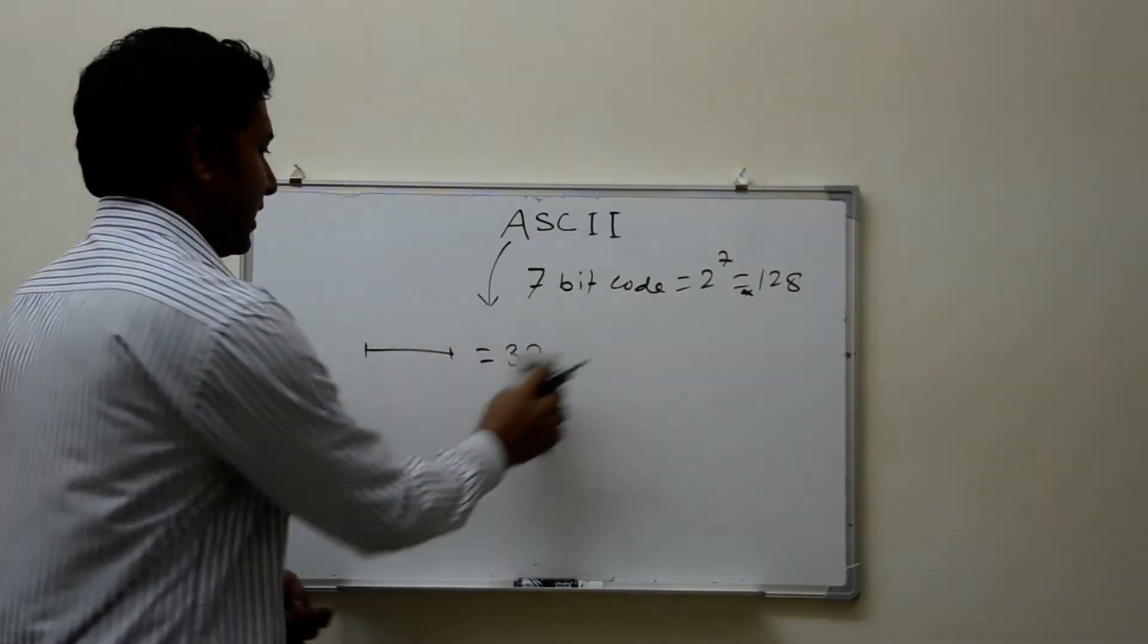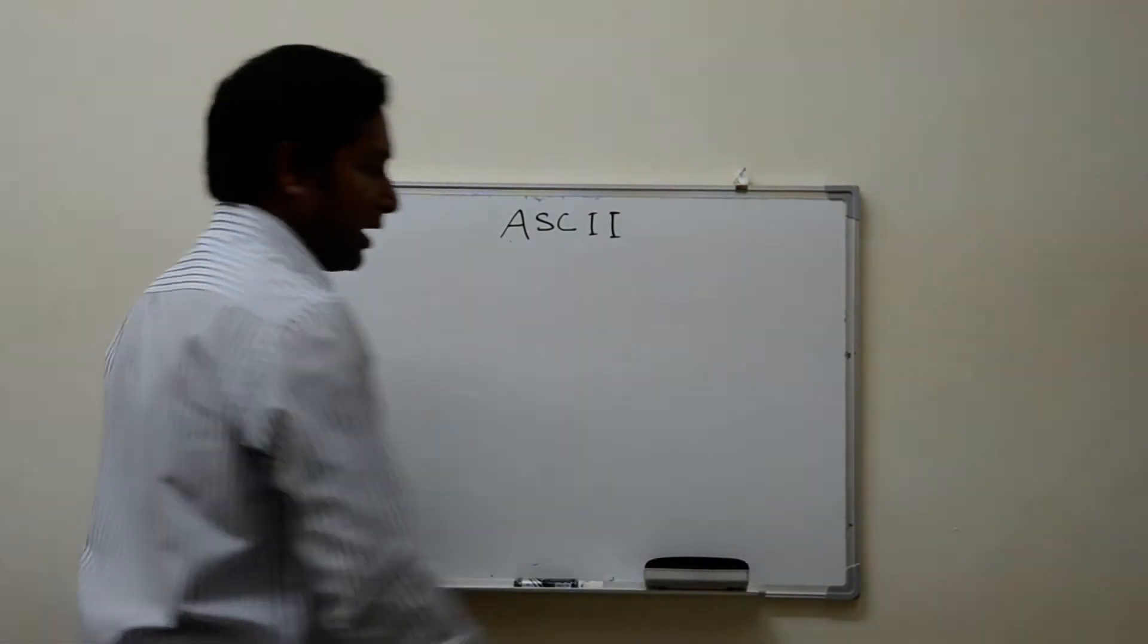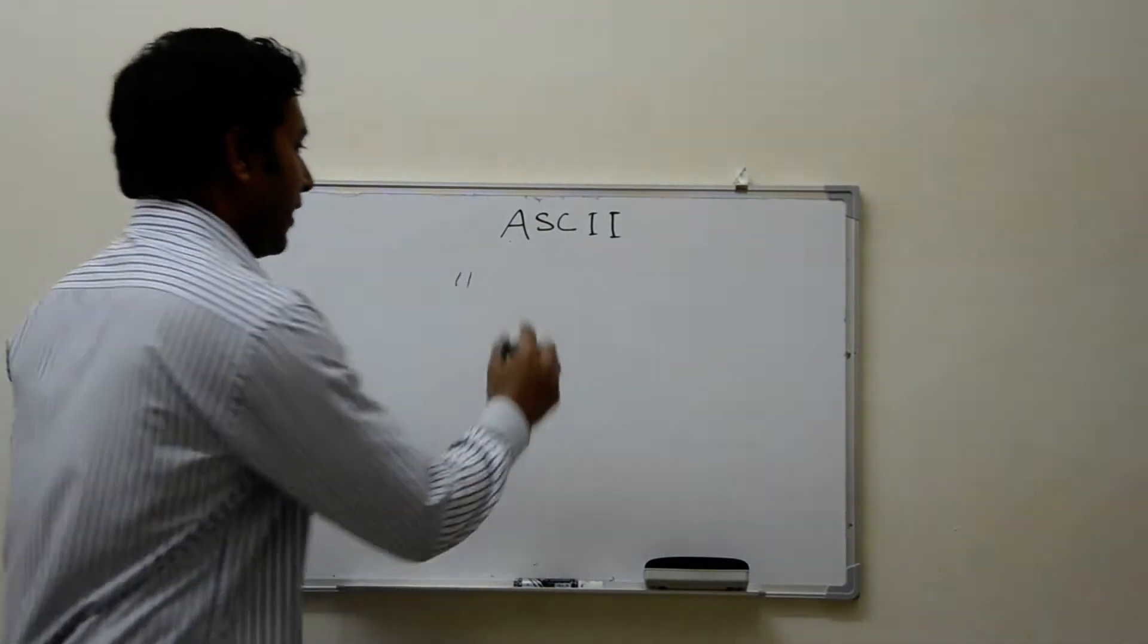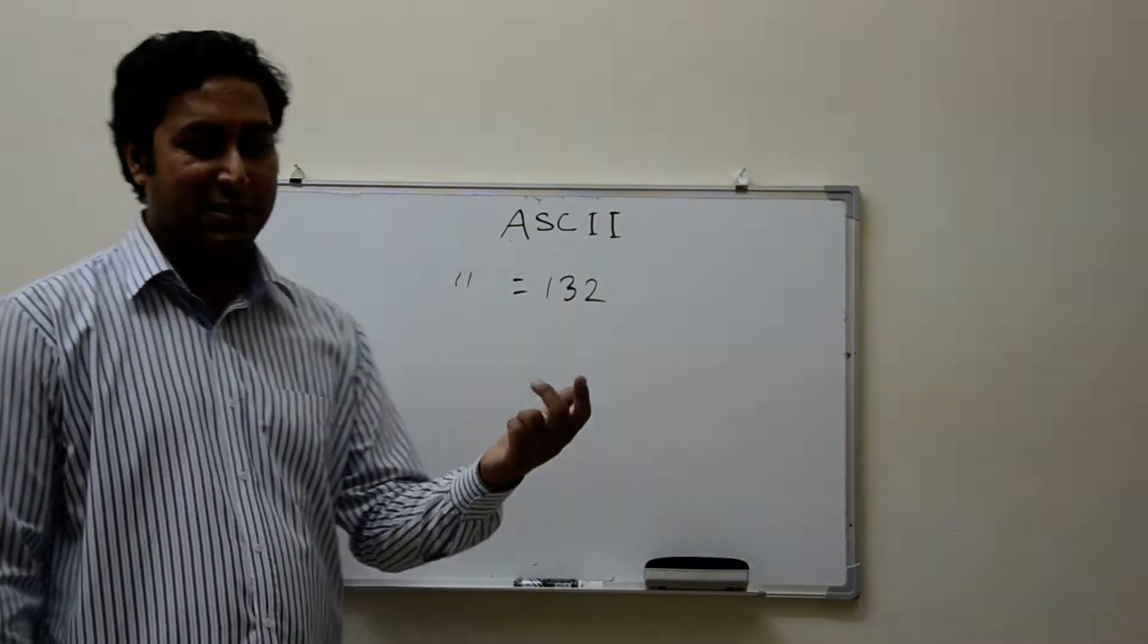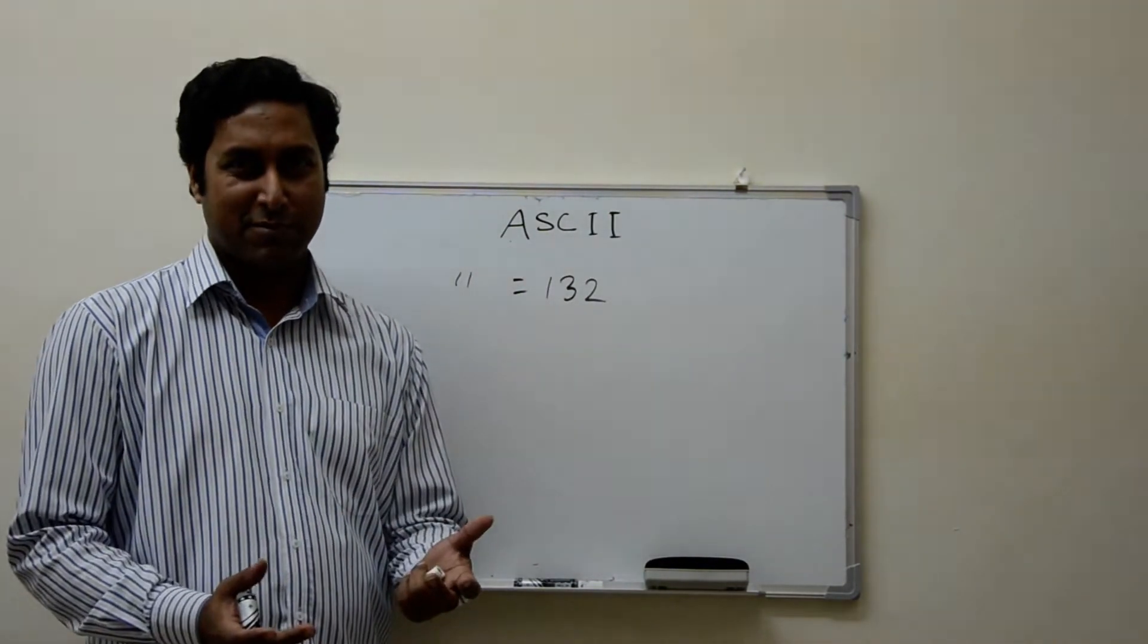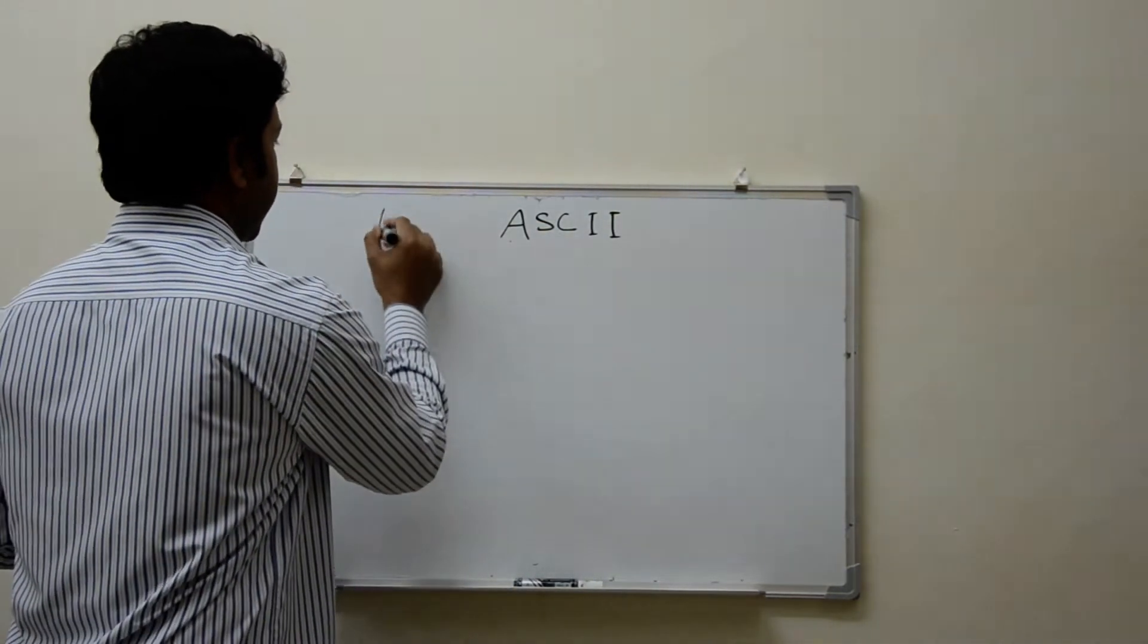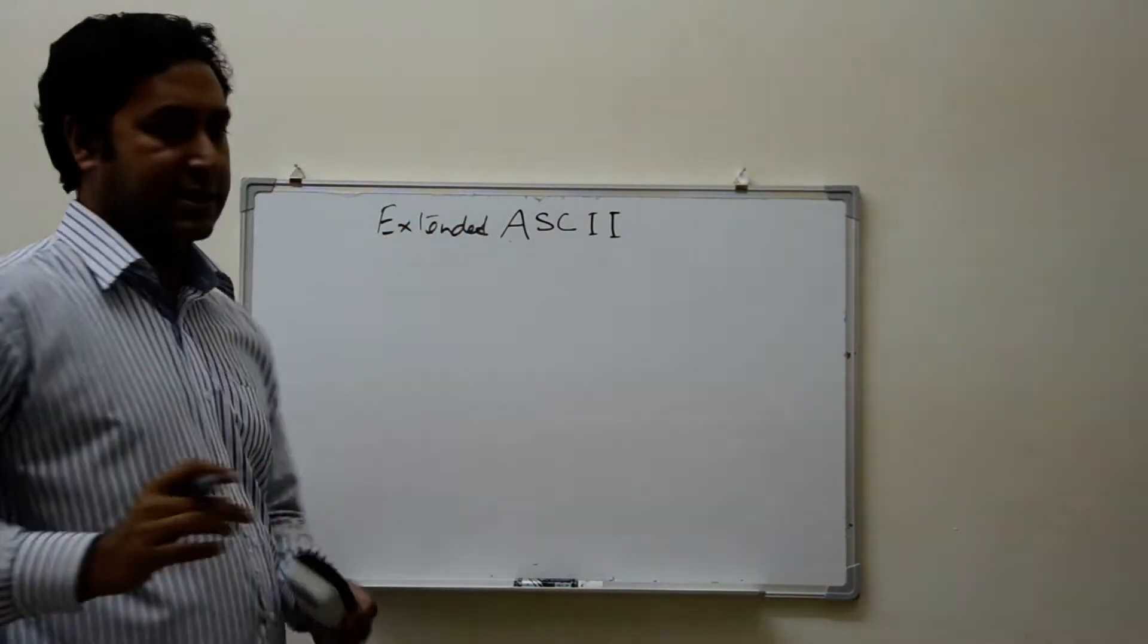But now there are some keys which are there in the keyboard, like if you think about double quotation, the value of this one is 132, which doesn't belong to 128. Now there is a problem, but that is also being covered by extended ASCII.